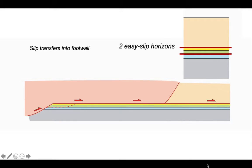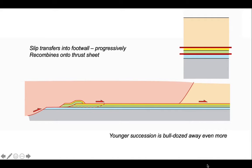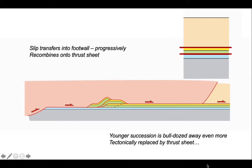Now we're going to consider activating a lower easy slip horizon at the base of the green. And the slip now will transfer onto this footwall panel, making a thrust slice and another one and another one. Each slip increment transferring displacement onto the lower slip surface and then back up onto the upper one to isolate thrust slices like this.